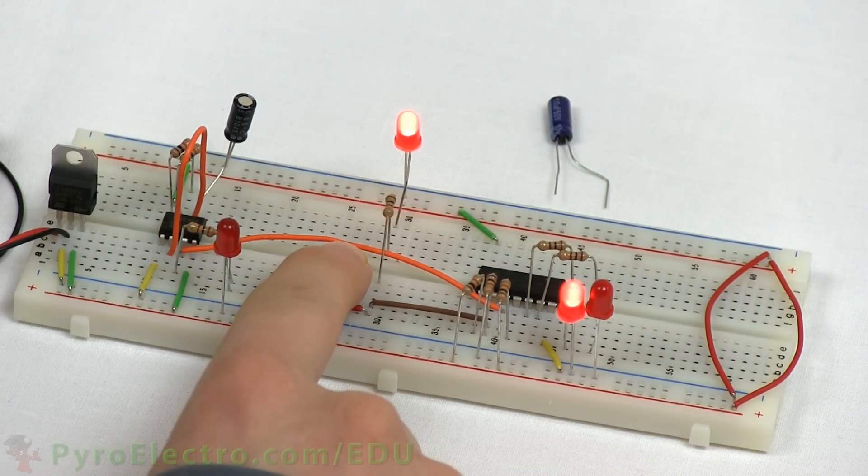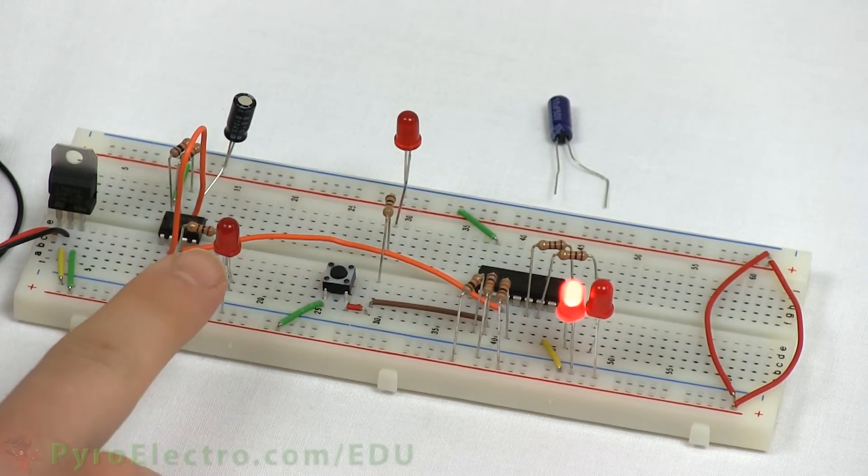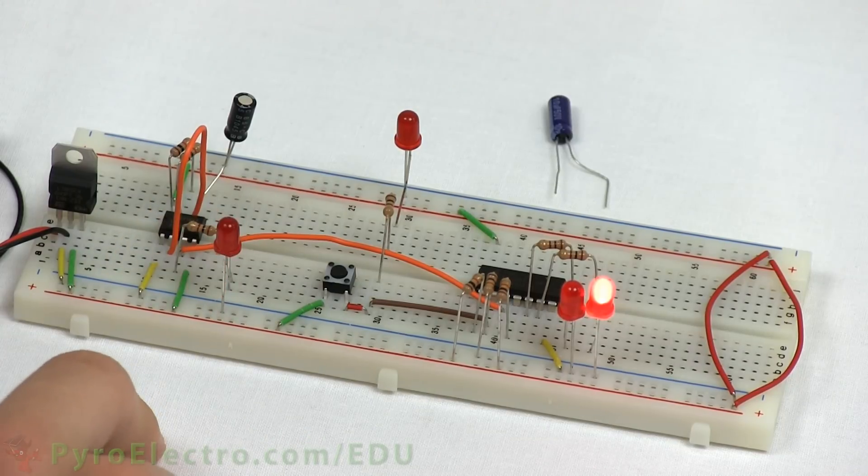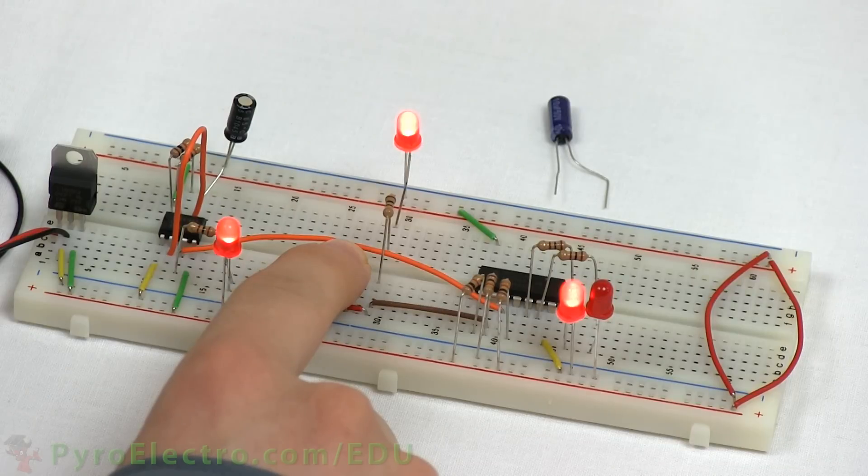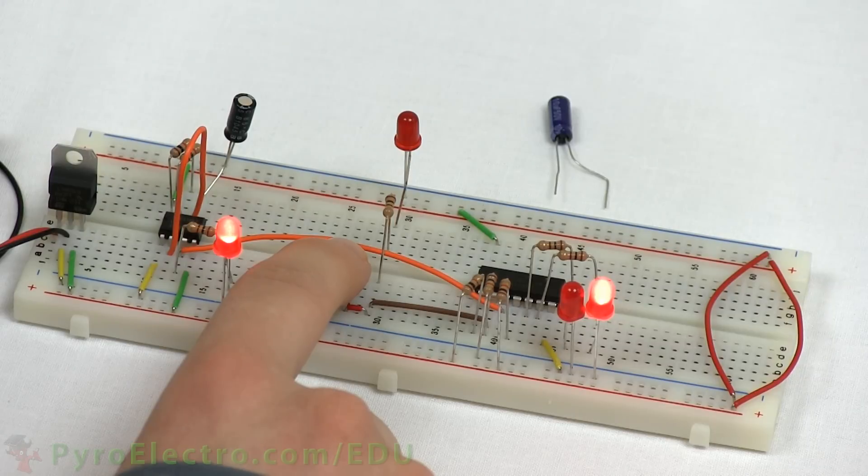However, when we stop pressing the push button, the input at D is reconnected to ground through the 10kohm resistor, and the output goes back to being logic 0.